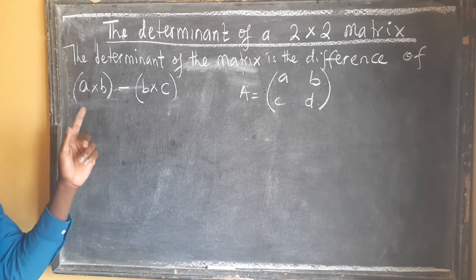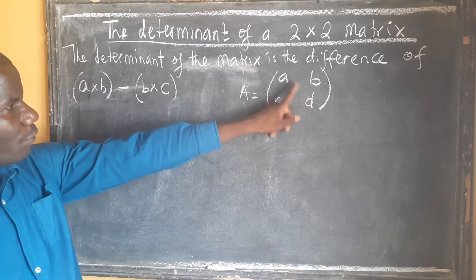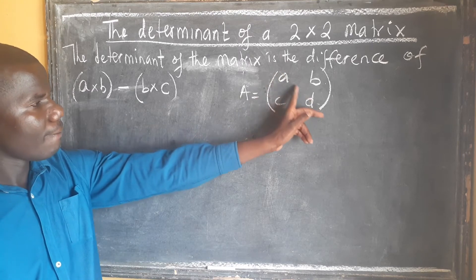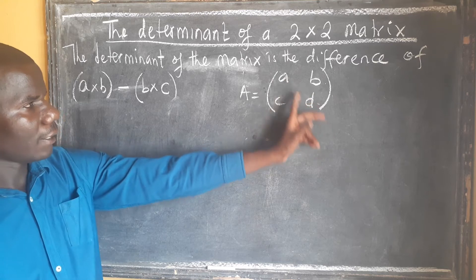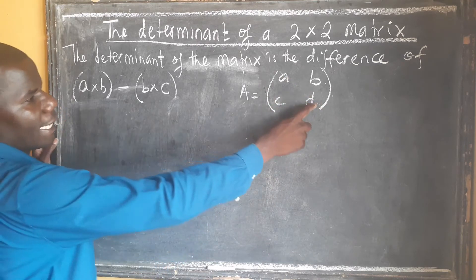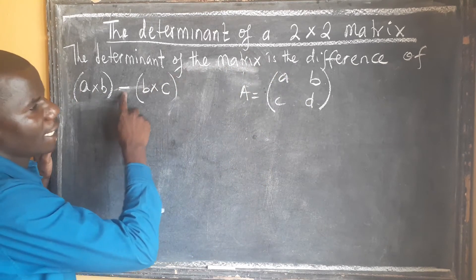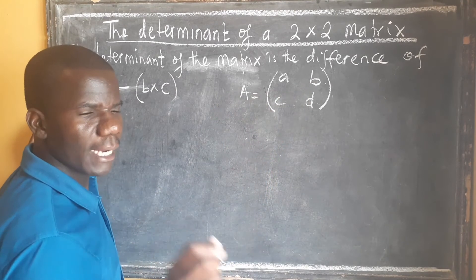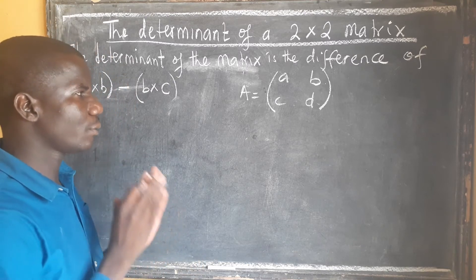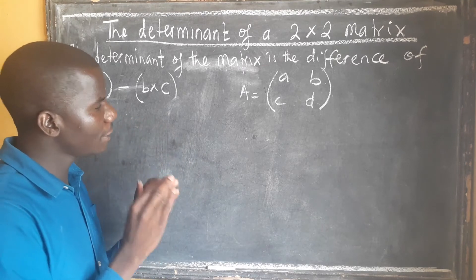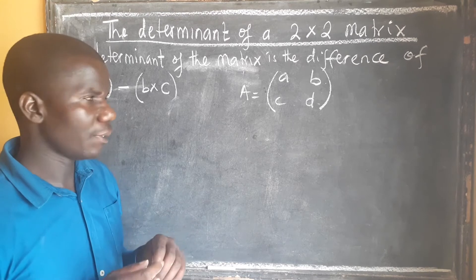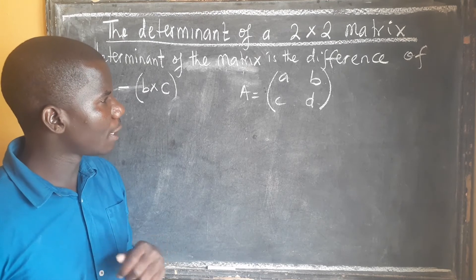A determinant of a matrix is the difference of the product of the entries. We call these entries or elements. We need to multiply the two entries in the main or major diagonal, then minus the product of the entries in the minor diagonal — what you get is going to be your determinant. The only challenge students face is when integers are incorporated, as many learners still encounter problems with integers.